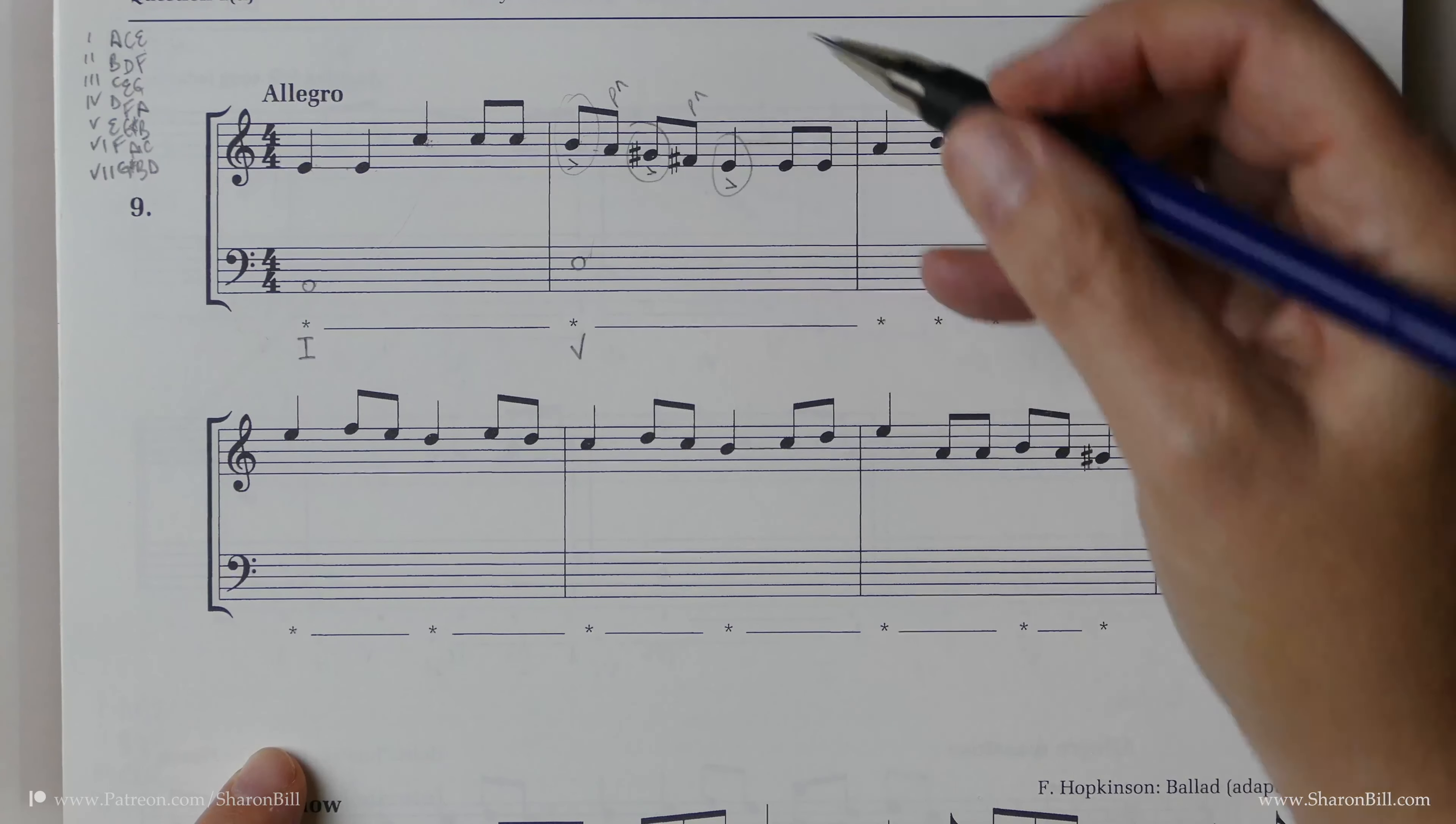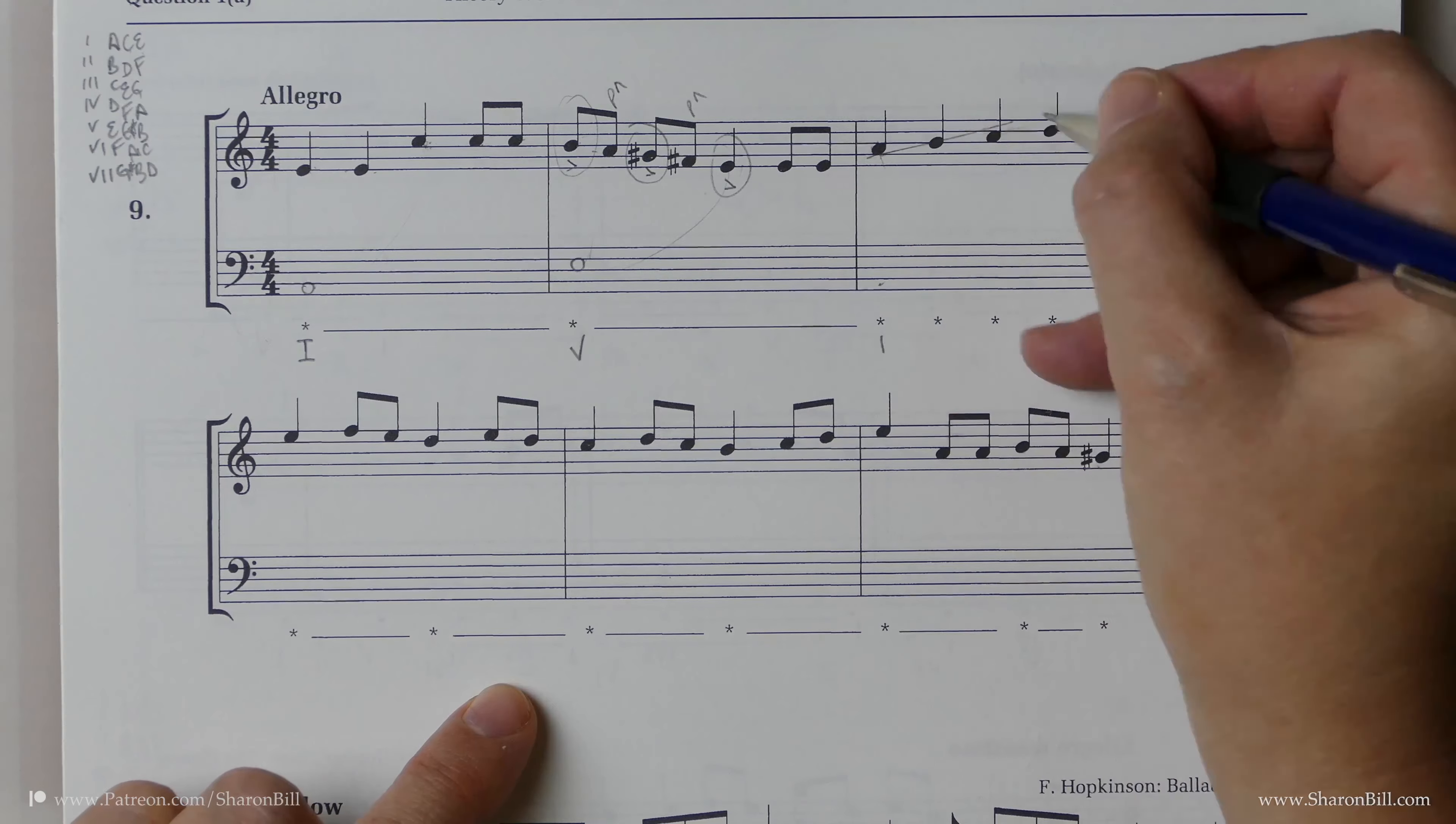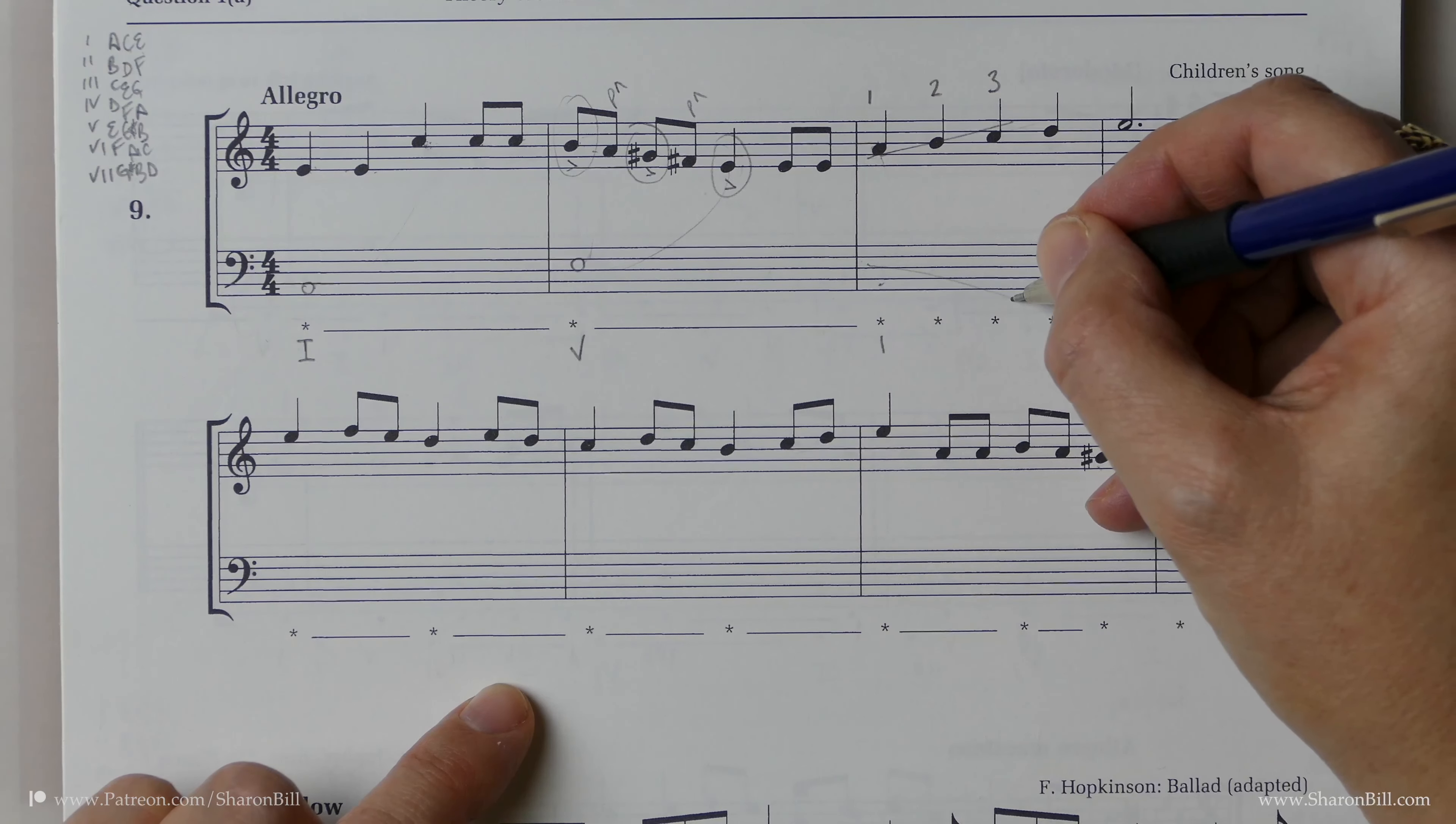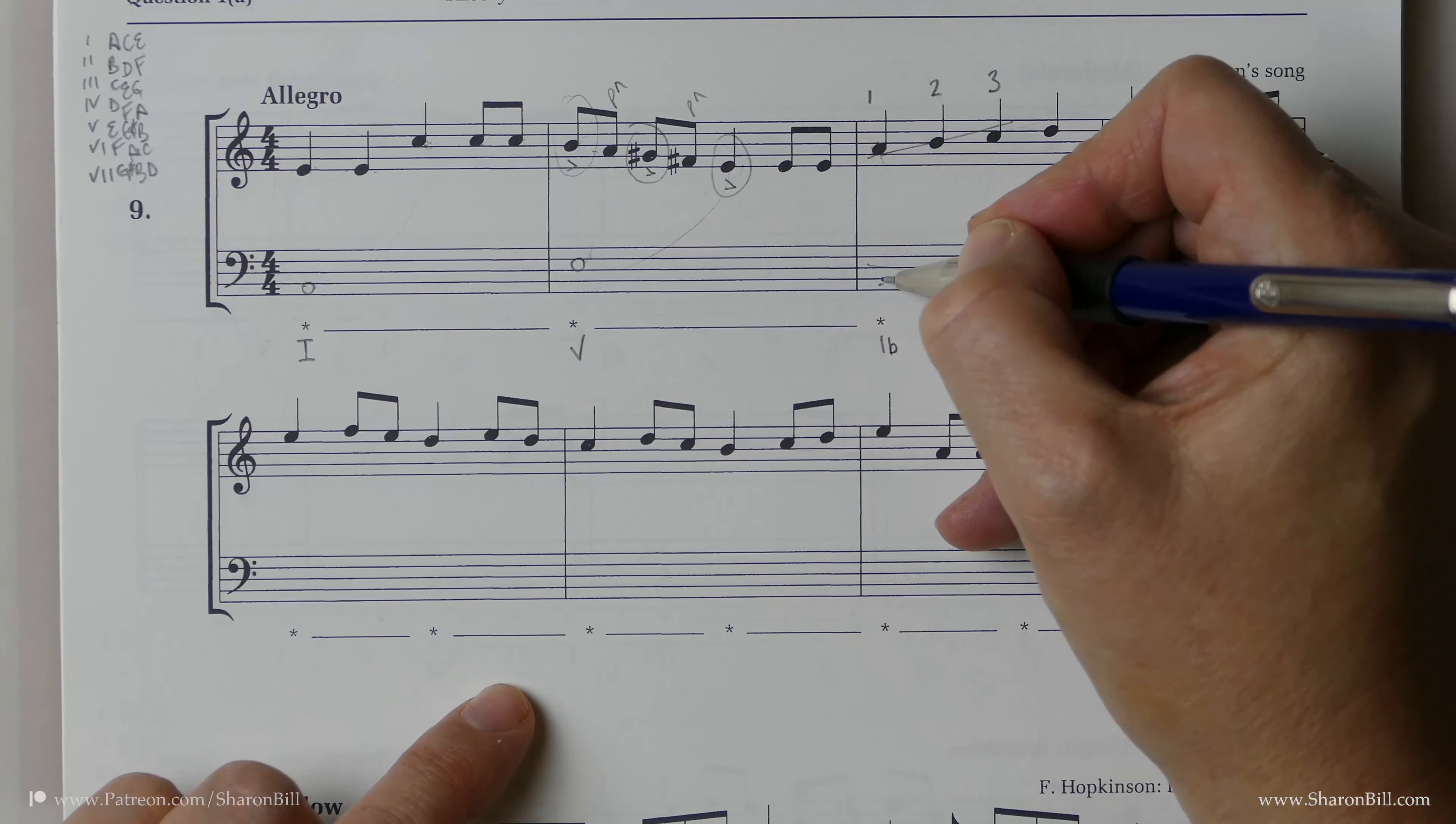So there are no consecutive fifths. However, here E to E will give us an octave. So we just need to be careful what we do here. Here we have the classic passing 6, 4. If you see notes 1, 2, 3 in the melody line, we want to have contrary motions stepwise in the bass. And 1B, 5C, 1 is the prescribed progression for this passing 6, 4 here. And then that will get rid of our consecutive octave problem as well.